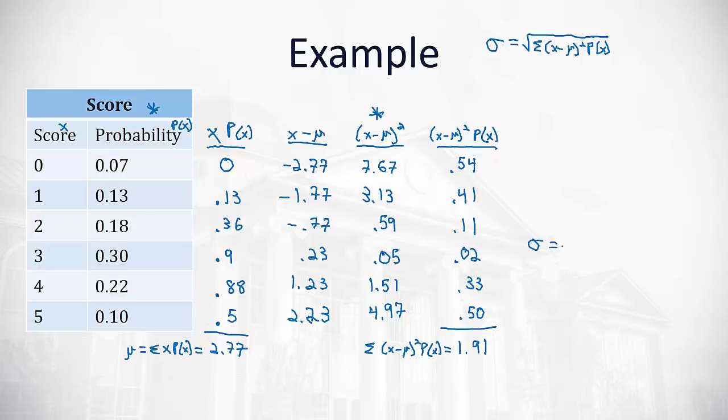And the standard deviation is the square root of that number. The square root of 1.91, which is 1.38 approximately. Now, I was rounding to two decimal digits, so I probably lost some accuracy. But the important thing you see here is the process we walk through in order to find that standard deviation.